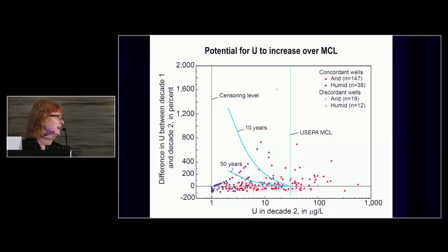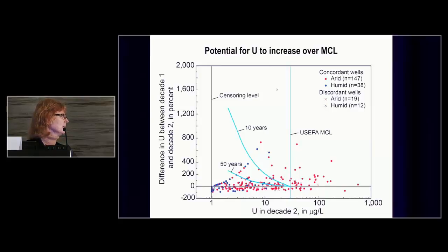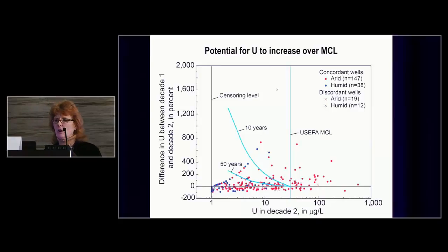From a human health perspective: if concentrations increase at the same rate they increased in the last decade, wells within a certain envelope that were increasing will bump up over the MCL within roughly 50 years. Most of those dots are the red arid wells where both uranium and bicarbonate are increasing.